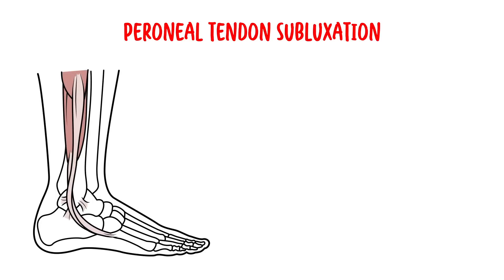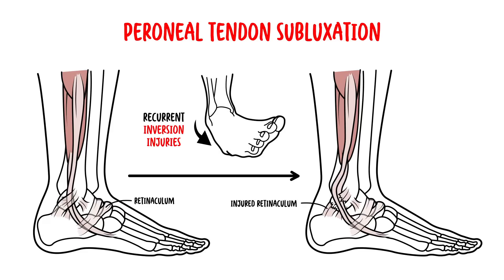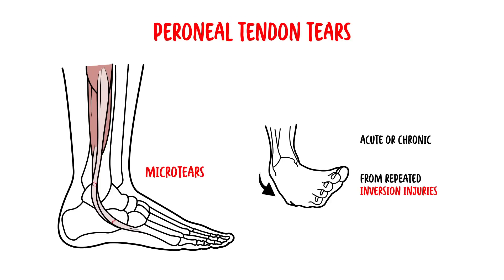Another cause of lateral ankle pain is peroneal tendon subluxation. The peroneal tendons, like many tendons in the body, are held in place by supportive connective tissue such as ligaments or the retinaculum. If the supportive tissue has been damaged from recurrent inversion injuries, the tendon may be free to slip out of its normal position — this is called subluxation. The tendons usually relocate by snapping back into place. Additionally, peroneal tendon tears can occur — acute or chronic — from repeated inversion injuries causing microtears to the peroneal tendon.